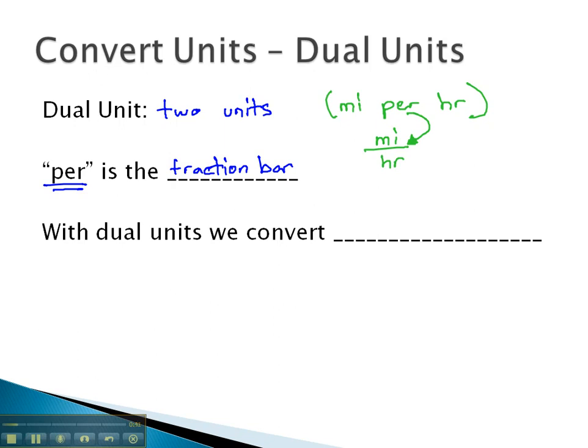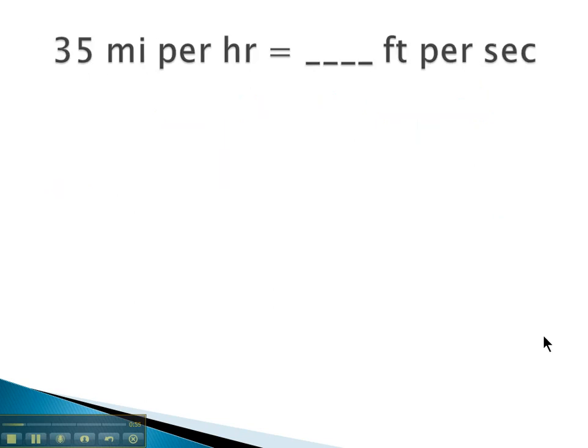And the trick with dual units is we must convert them one at a time. So we'll use one conversion factor to convert the numerator to what we want and one conversion factor to convert the denominator to what we want. So for example, if we want to convert 35 miles per hour into feet per second, remember per is the fraction bar, so we have 35 miles per or over hours.